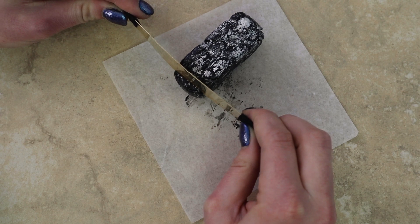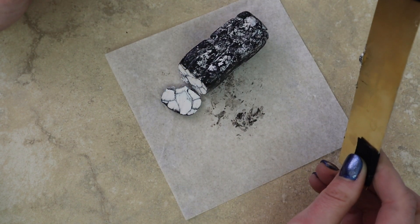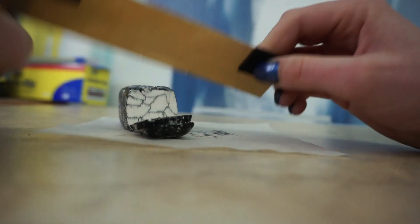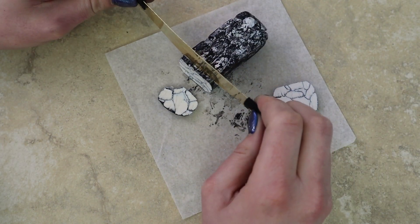Once you have formed this into a log type shape, you can go ahead and start cutting slices. You want these to be about a fourth of an inch to an eighth of an inch, around that area. You want them to be a little thicker than what you ultimately want because you will be rolling this out.